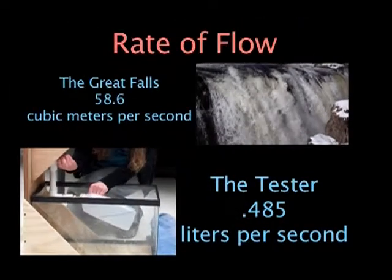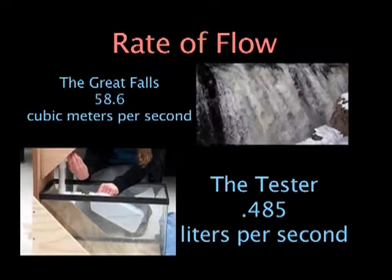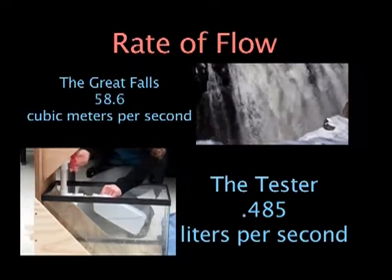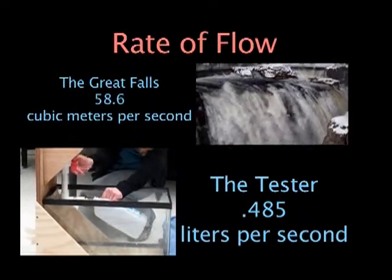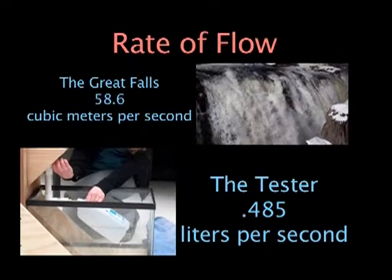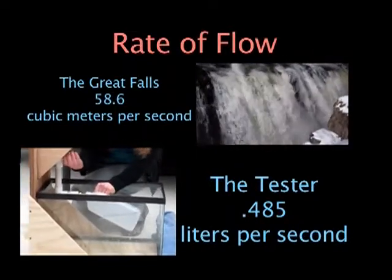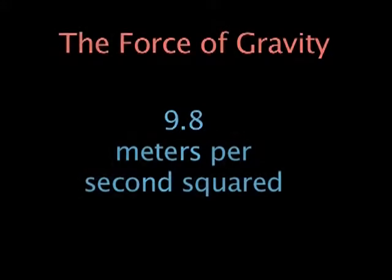Your team will take measurements and calculate the potential power from the tester. You will calculate the rate of flow of the tester multiple times using a stopwatch, along with analyzing video recordings to determine the accurate rate of flow. The force of gravity on Earth is 9.8 meters per second squared.